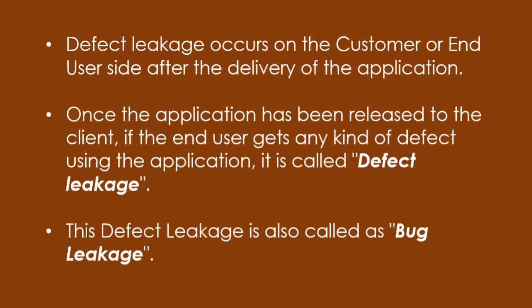In simple words, suppose you have tested an application and you have missed a particular defect while testing. In that case, it will go to production. You missed a defect, the production deployment happens, and the end user or the client finds out there is a defect in the application which was missed. That stage or phase of the bug is known as defect leakage or bug leakage.